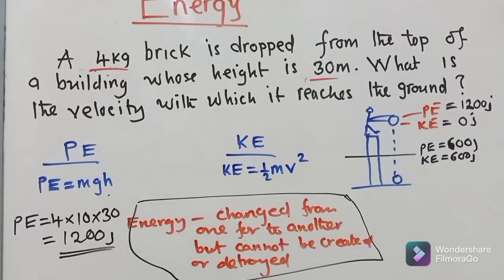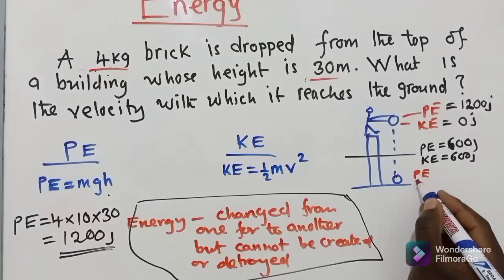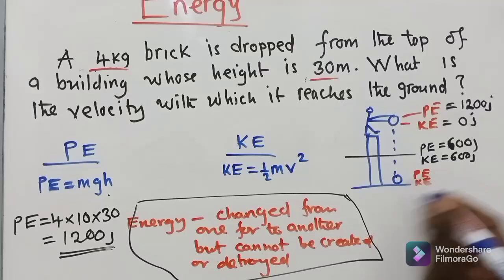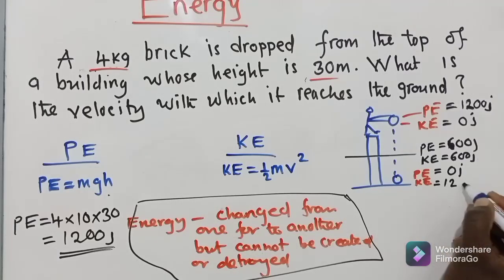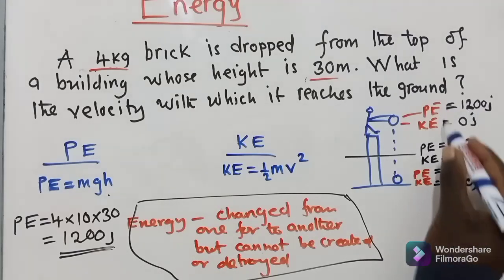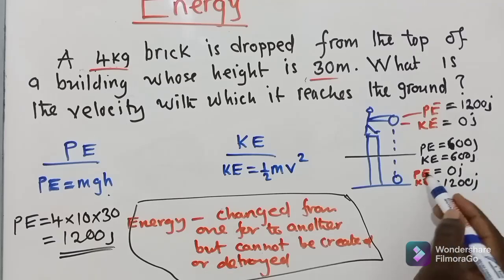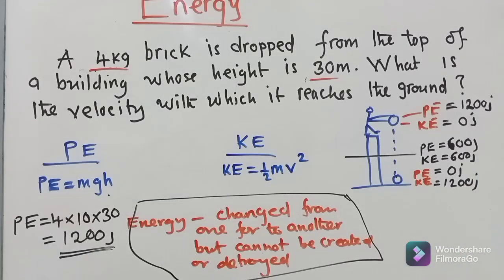Before the brick touches the ground, the potential energy changes to zero and the kinetic energy becomes what the potential energy was at the top — 1200 joules. So kinetic energy becomes 1200 joules and potential energy is zero. Since we now have the kinetic energy, we can use it to find the velocity, which is what the question asks us to find.